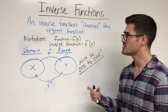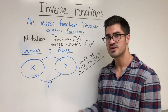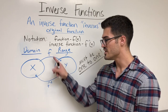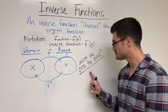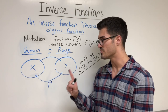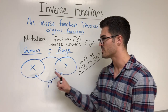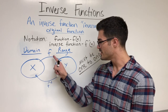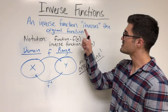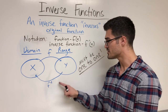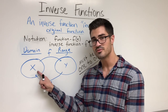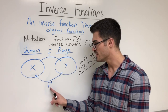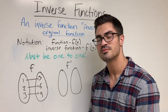So what is an inverse function? We have this function f, and since it's a function, each input has exactly one output. But in order to find the inverse of f, f needs to be one-to-one, which means each output is the result of only one input — a one-to-one correspondence between all elements of the domain and range. The inverse maps elements from the range back to elements of the domain.